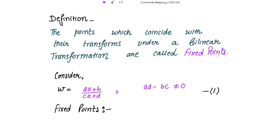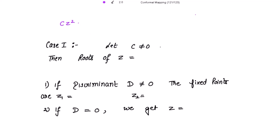For the fixed points, we have to put w equal to z. Writing w as z to get the fixed points, this gives z equal to az plus b over cz plus d. Taking the denominator to the other side, it gets multiplied with z, giving the quadratic equation: cz squared plus (d minus a) times z minus b equals zero, which is a quadratic equation in z.